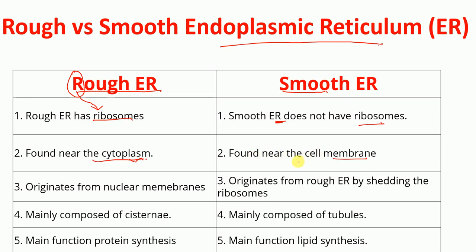Rough endoplasmic reticulum originates from the nuclear membrane, whereas smooth endoplasmic reticulum originates from rough endoplasmic reticulum by shedding its ribosomes.